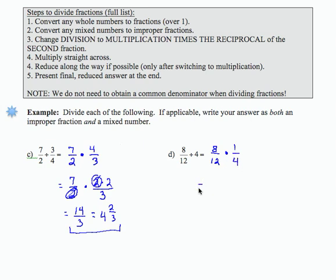Now I have 8 over 12 times 1 over 4. I'm going to write that as 2 times 4 times 1 over, and then my 12, I'm going to write as 2 times 6. And then I have the times 4 from the second fraction.